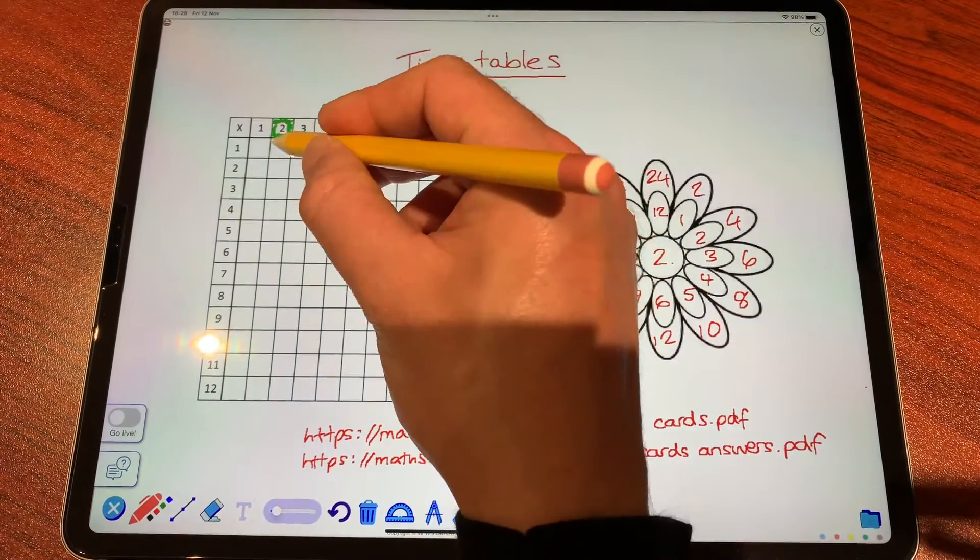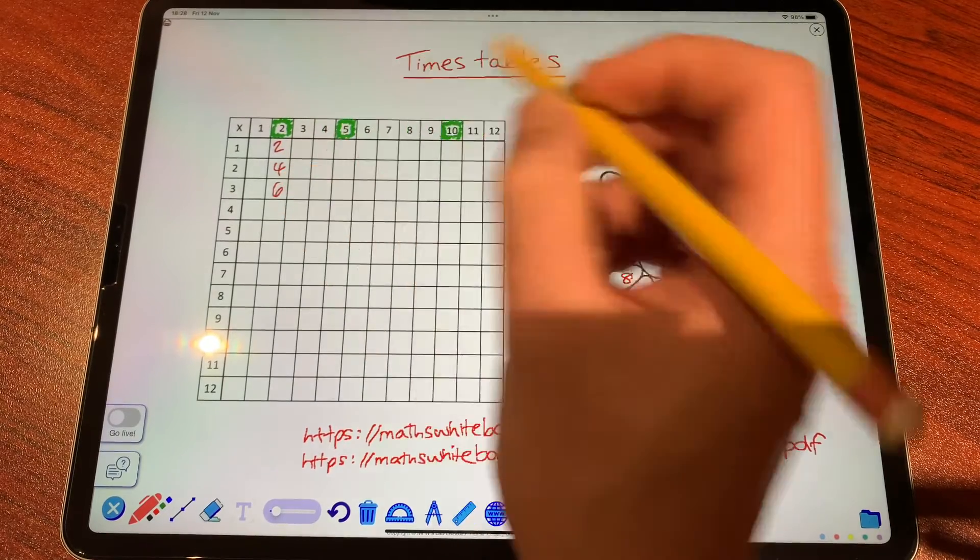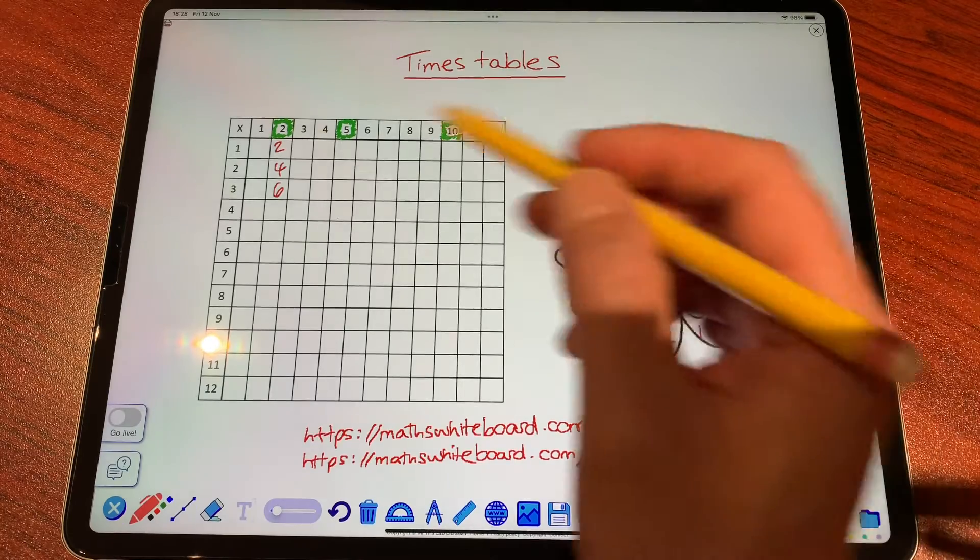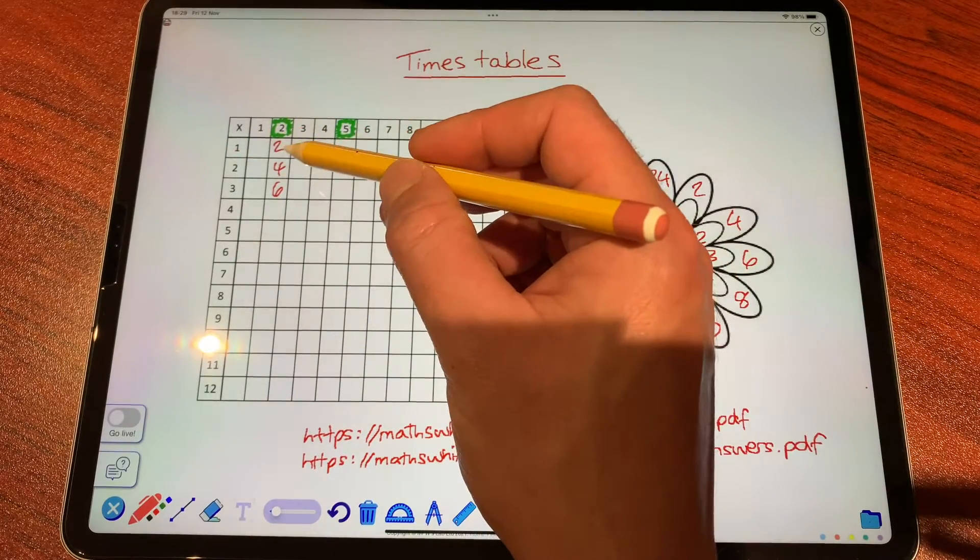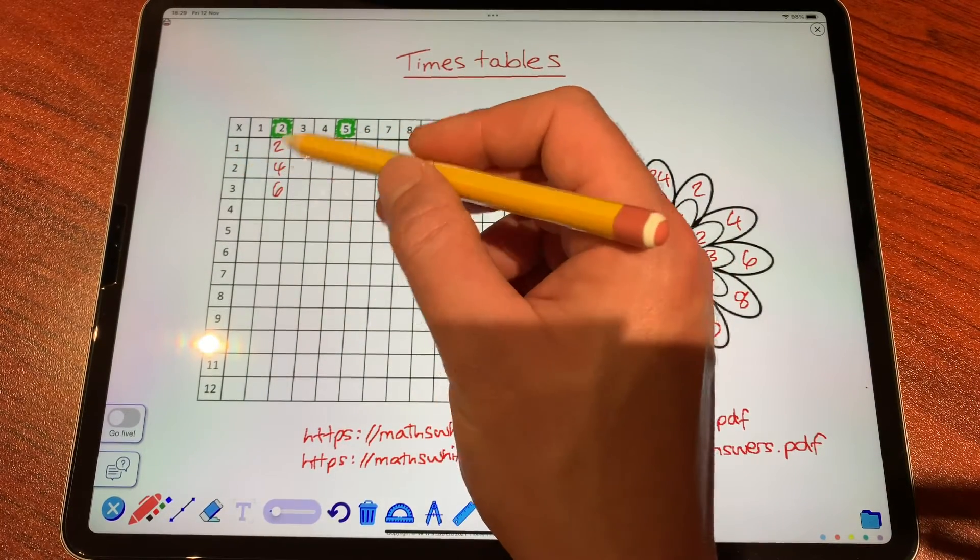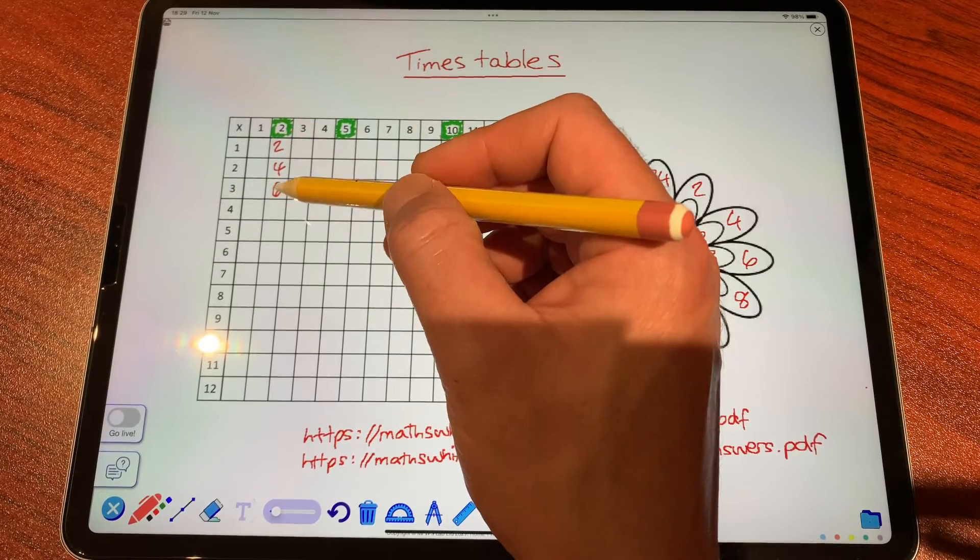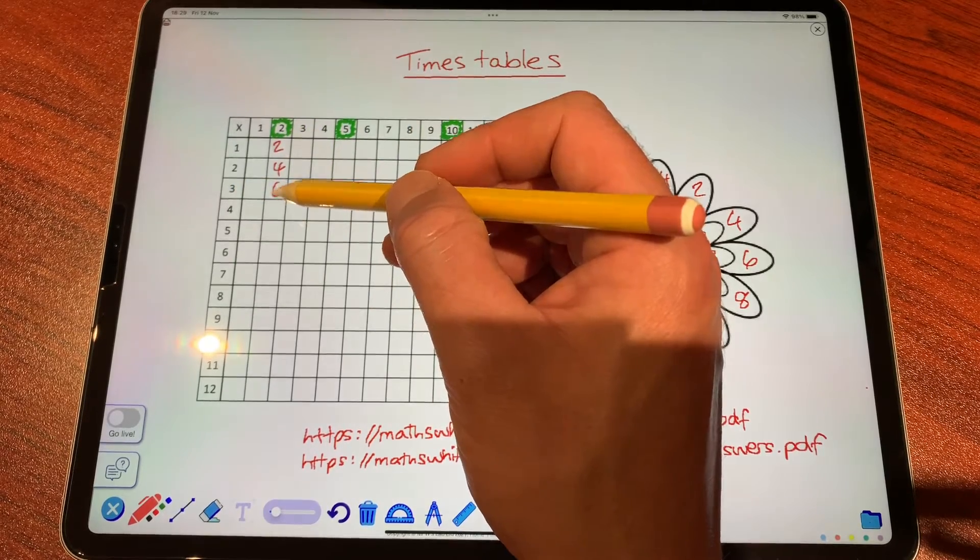You can fill in your multiplication grid in a similar way to what we did with the Waldorf multiplication flower. 1 times 2 is 2, 2 times 2 is 4, 3 times 2 is 6, and the process carries on.